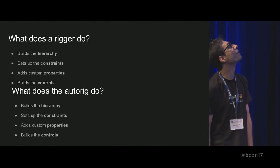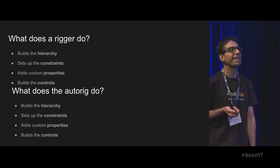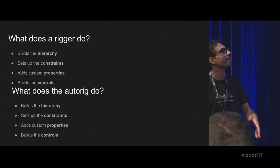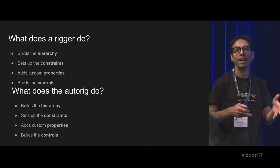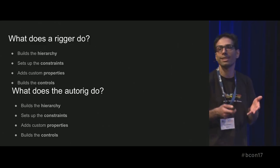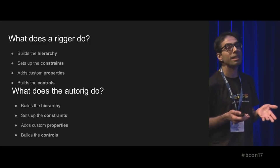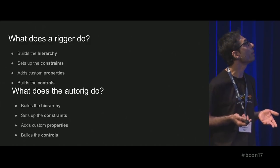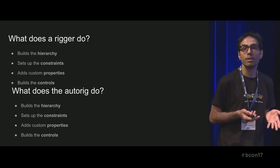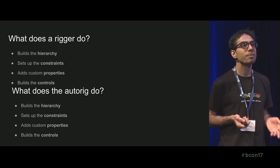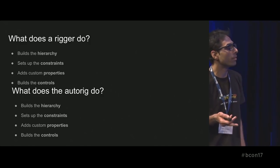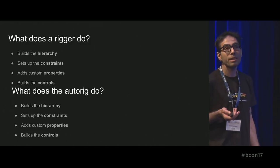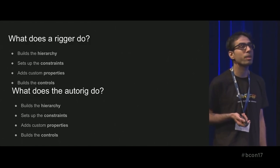The job of a rigger — somebody says — is just putting bones into it. So we build a hierarchy of transformations, the skeleton, and we set up the constraints: rules about how this skeleton should move. We add custom properties because sometimes you need more specific controllers, and we build the controls so the animator can access them.